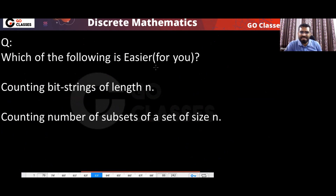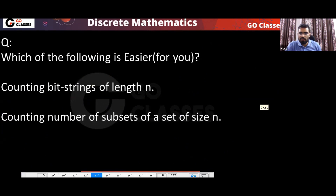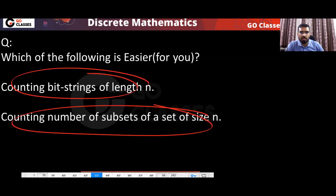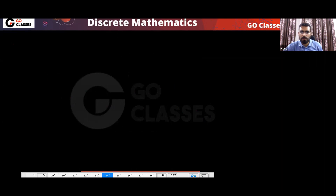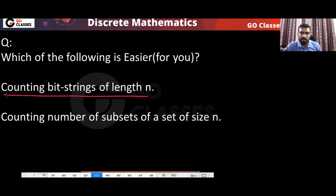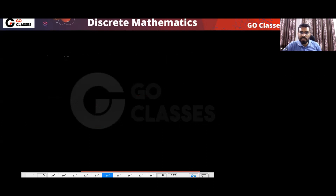Now, which of these problems was easier for you to understand? Whichever is easier to count, you can find the other answer from it. Now let's see another pair of problems that are actually similar: bit strings of length N and subsets of a set of size N. These two are actually similar.